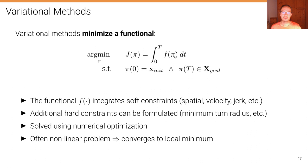That functional f of pi integrates soft constraints such as constraints about the spatial location or the velocity or jerk that might be applied. But there's also additional hard constraints that can be formulated, such as the minimum turn radius that the vehicle can turn, or the starting location and the goal location. The starting location is the configuration of the vehicle at time 0 and the goal location is the configuration of the vehicle at time capital T.